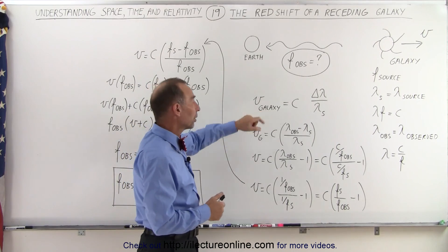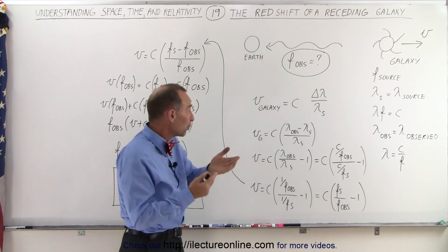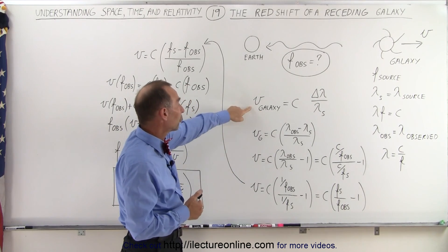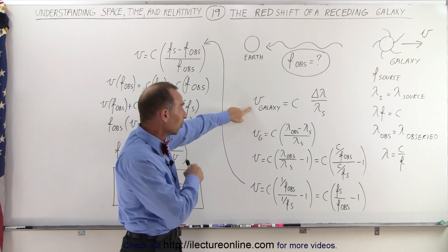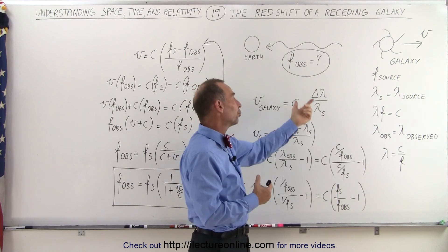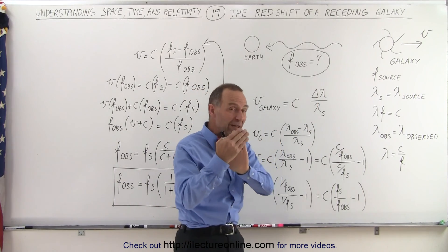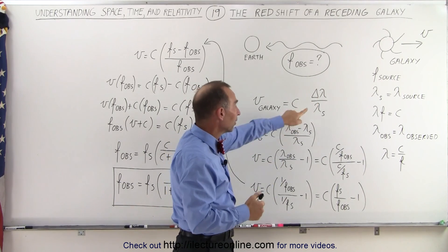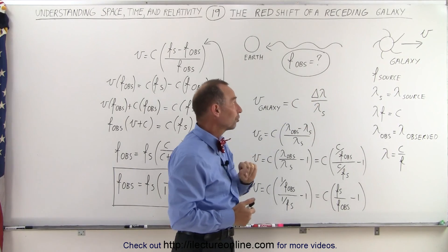We start with the same equation where we noticed in astronomy we use this equation all the time, that shows us that the velocity of a galaxy can be determined by taking the speed of light and multiplying it times the ratio of the change in the wavelength of the light approaching us, divided by the wavelength of the source of the light.